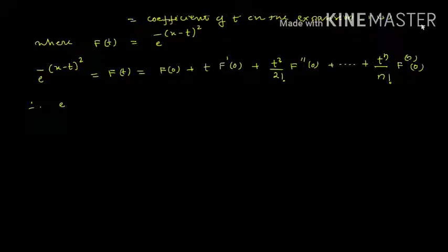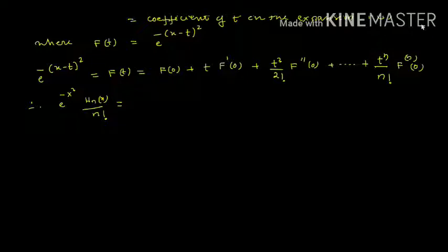Therefore, e^(-x²) times Hn(x) divided by n! is the coefficient of t^n in the expansion of F(t). The coefficient of t^n is 1/n! times F^(n)(0), the nth derivative of F evaluated at 0.